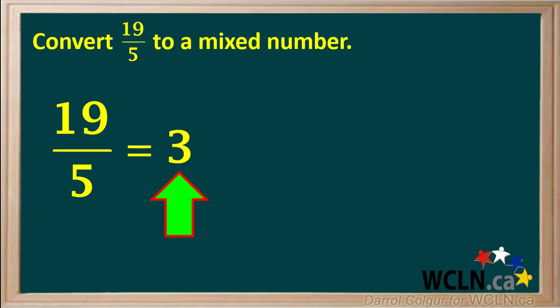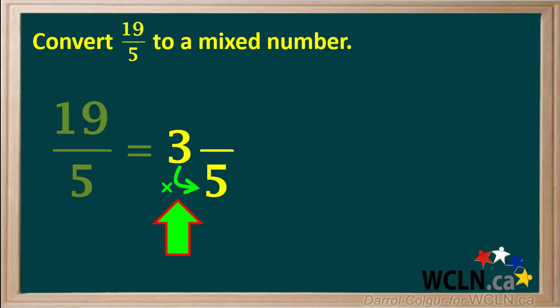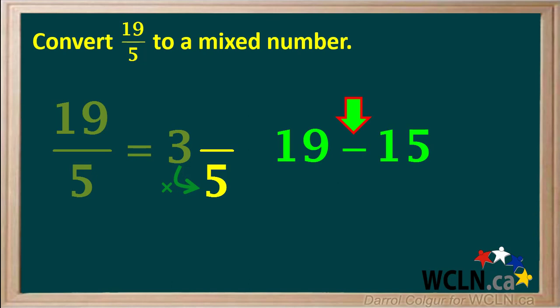Because 5 times 3 is only 15, we're going to have a remainder. The remainder will be a fraction with the same denominator as our original fraction, which is 5. Now we multiply the whole number 3 by the denominator 5, which gives us 15. To find the numerator of our remainder fraction, we take the numerator of our original fraction, the 19, and subtract the 15 from it, which gives us 4.